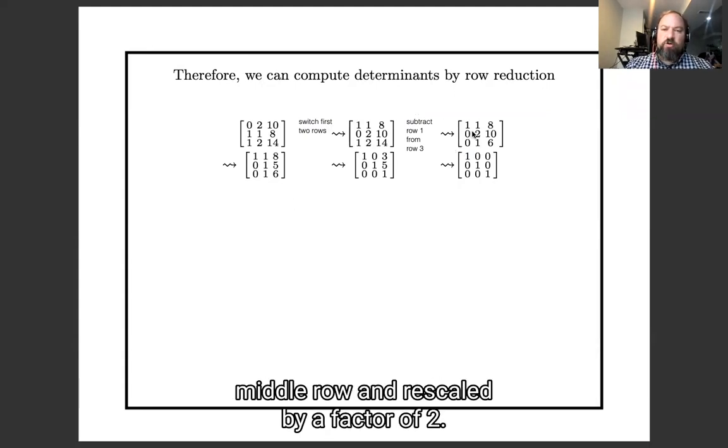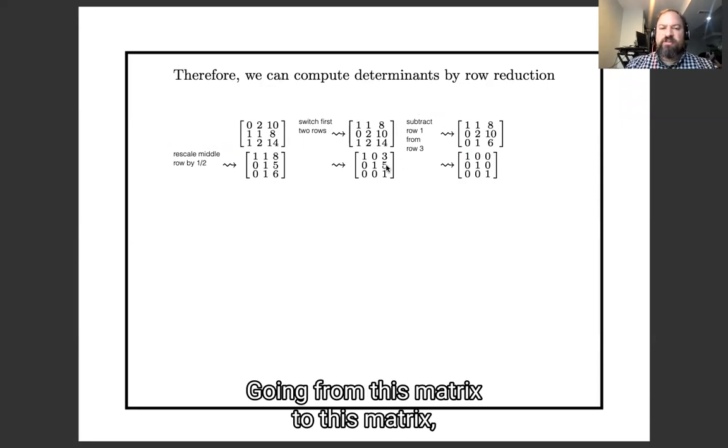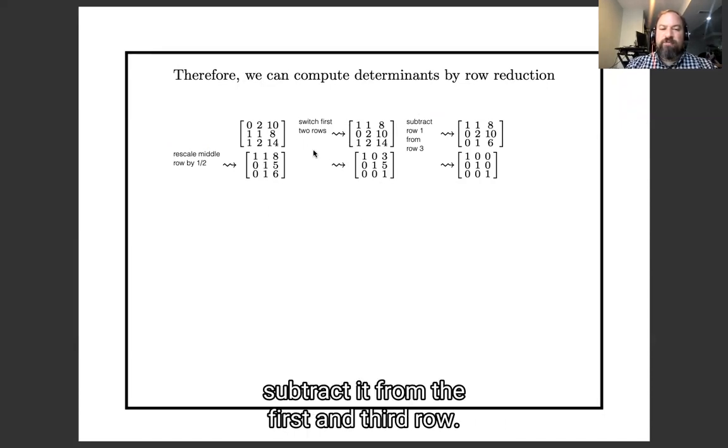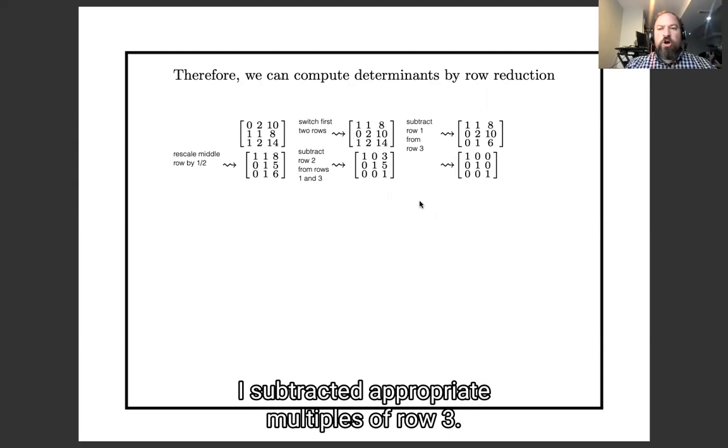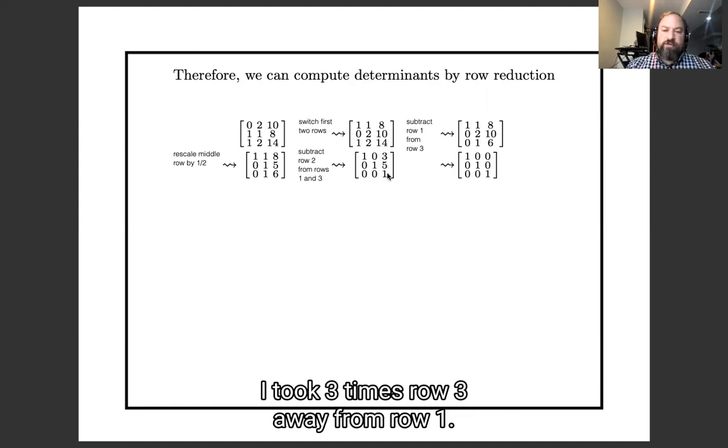In the next step, I'm going to take this middle row and rescale it by a factor of 2. Going from this matrix to this matrix, I took that middle row, so now I've got my pivot column in the first column, just like I should. And now I'm going to make a pivot column in the second column by taking this middle row and subtracting it from the first and third row. And in the final step, I took certain multiple, I subtracted appropriate multiples of row 3 from rows 2 and 1. I took 5 times row 3 away from row 2, and I took 3 times row 3 away from row 1.